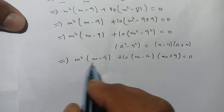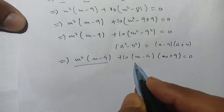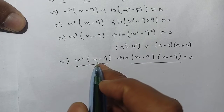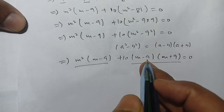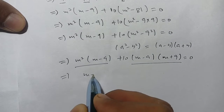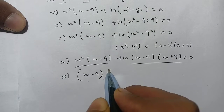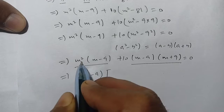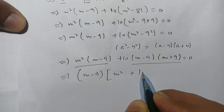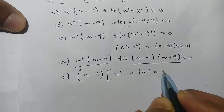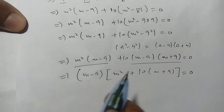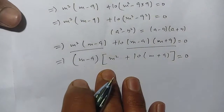From both terms, (m - 9) is common. We factor it out to get (m - 9)(m² + 10(m + 9)) = 0.